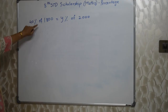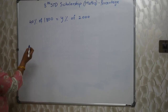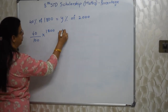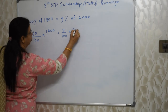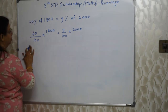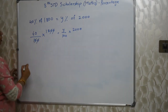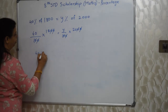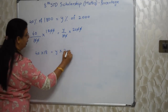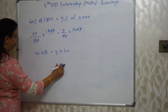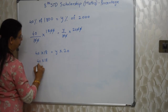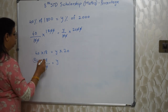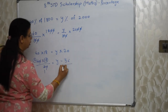Last sum, written on the board: 40% of 1800 = y% of 2000. Very easy. Write it properly: 40/100 × 1800 = y/100 × 2000. Concentrate on one side and remove zeros. 40 × 18 = y × 20. So y = 40 × 18 / 20 = 36. Y is equal to 36.